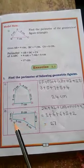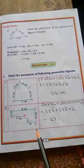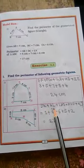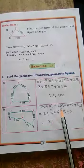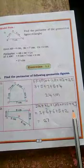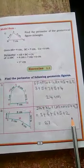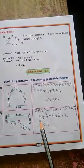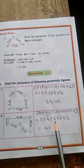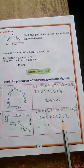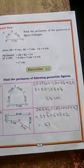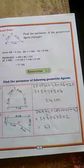J K L M N. J K is 8, K L is 6, L M is 6, M N is 5, and N J is 2. 8 plus 6 is 14. 14 plus 6 is 20. 20 plus 5 is 25. 25 plus 2 is 27. So we find the perimeter of the geometrical figure is 27 cm.